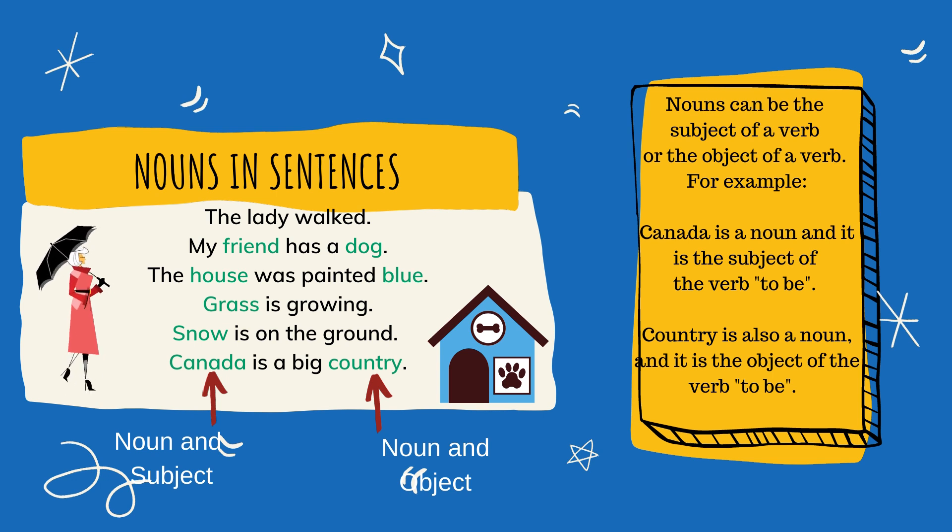Grass is growing. Snow is on the ground. Canada is a big country. A noun can be both the subject of a sentence and the object of a verb. What this means is that the sentence is about Canada. We are saying that Canada is — 'is' is a form of the verb to be. Canada is a big country. The object answers the question: what? What about Canada? It's a big country. So nouns can be the subject of a verb or the object of a verb.